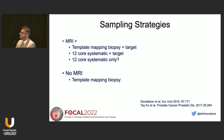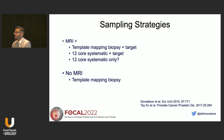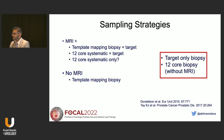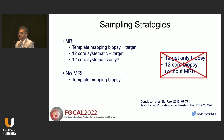In situations where patients cannot get MRI — such as those with a pacemaker or metal in the body — the consensus statement indicates that patients should have a template mapping biopsy before being offered focal therapy. A 12-core biopsy without MRI, or a target-only biopsy that does not sample MR-negative areas, is not a recommended sampling strategy to identify focal therapy candidates.